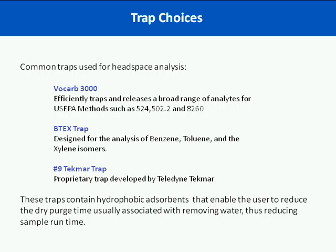As I mentioned earlier, there are many trap choices when doing dynamic headspace analysis. Some common traps used today are your Vocarp 3000, which is typically seen for Method 8260, 502, 524, 1035, etc. The BTECS trap is designed for the analysis of benzene and xylene isomers. The Number 9 is a proprietary trap by Teledyne Techmar, designed as an improvement over the Vocarp 3000 trap. If you're having issues with water management or not good retainment of your gases and you're currently using a Vocarp 3000 trap, I would recommend moving to the Number 9 trap to see if you get better recoveries for your target analytes.